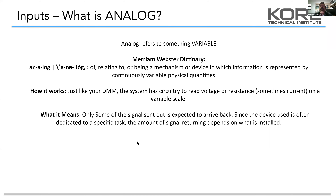Now let's talk about analog inputs. Analog simply means variable — something that throttles or varies from a minimum to a maximum. The two types of analog inputs we're going to see a lot are either temperature, where we're using thermistors — most manufacturers use thermistors, and some use a variant like RTDs — and the other type of analog input are transducers, where you're going to get your pressures, humidity, liquid levels, leak detectors, light levels, and currents.